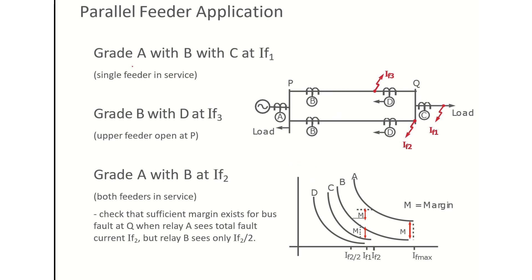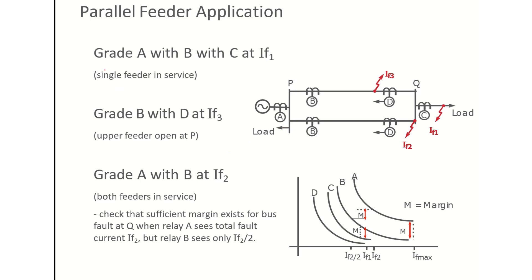These are the three coordination challenges: grade relay A with B with C for fault IF1 when only one feeder is in service; grade B with D for the fault on the top feeder with the other feeder open; and when both feeders are in service, ensure sufficient margin since relay A sees the total fault current but relay B sees only IF/2.